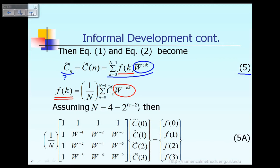Let's take a look at a specific numerical example to see how we calculate this term C-tilde(n), assuming we know the value of F sub K. In this case, let's say capital N is equal to 4. This 4 represents 4 data points, and 4 is the same thing as 2 raised to the power 2 — I mention that in preparation for future lectures.